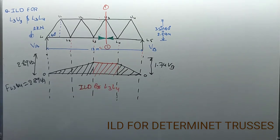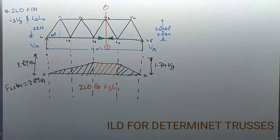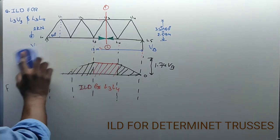With this, the ILD for determinate trusses is completed. If you try to solve some problems and don't get the answer, please let me know and I will help you. Let's start our next topic: ILD for statically determinate structures — fixed beams and propped cantilevers.